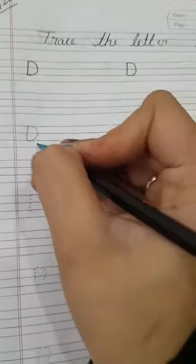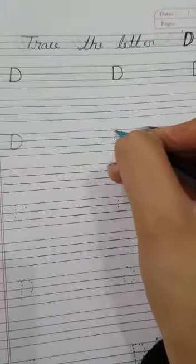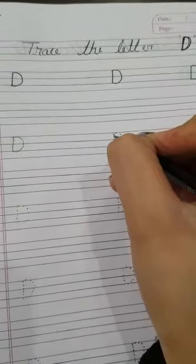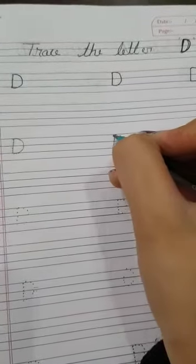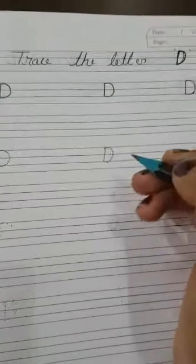Yes, this is letter D. Now here also, first we will draw a standing line and then a curve. What is this? Letter D.